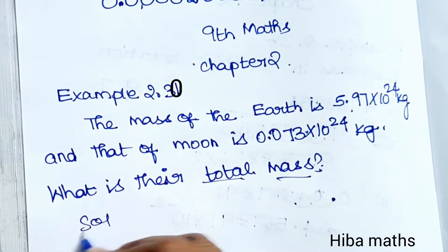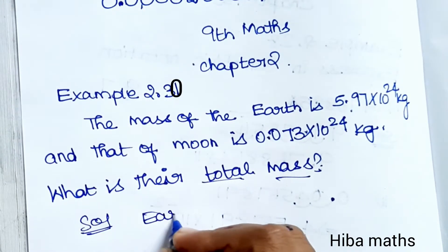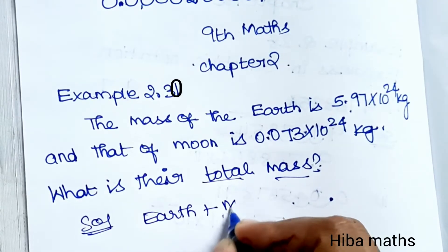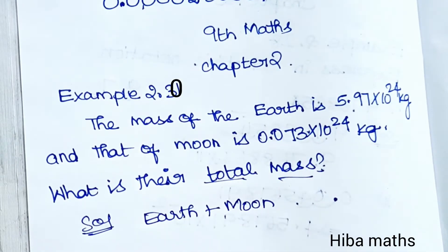So for the solution, we need to add Earth's mass and Moon's mass. This is very simple.